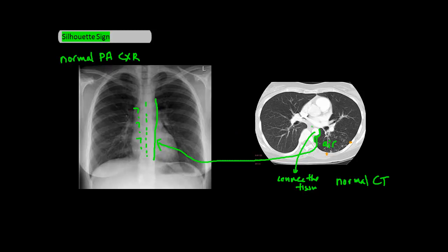The other border of the descending aorta, along the connective tissue of the mediastinum, is harder to see on a chest X-ray because both the descending aorta and the mediastinum have similar densities.